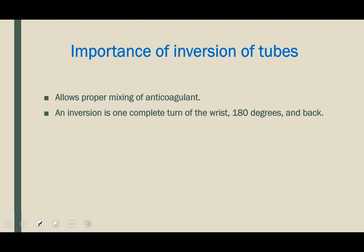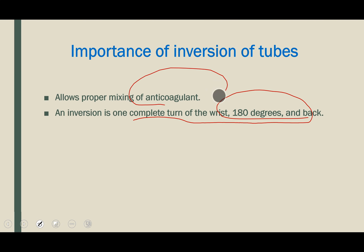Whenever you take blood in any anticoagulant-containing vial, you should always properly mix it. One inversion is one complete turn of the wrist — that is 180 degrees. Each colored vial has a specified number of inversions to be performed; this allows thorough mixing of the anticoagulant.